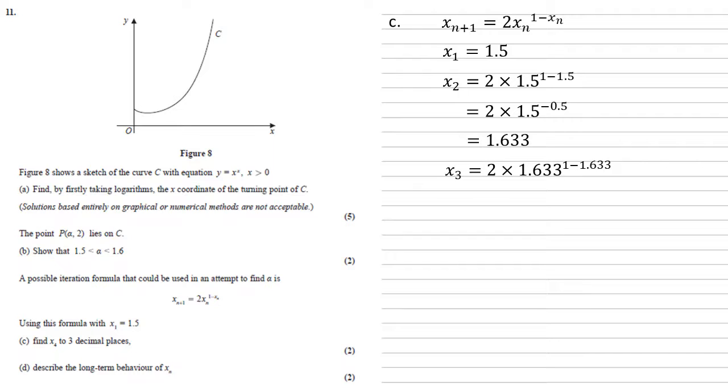So x3 is 2 times our x2 value, 1.633 to the power of 1 minus 1.633, which is 1.466. Putting that in again gives us an x4 value of 1.673.